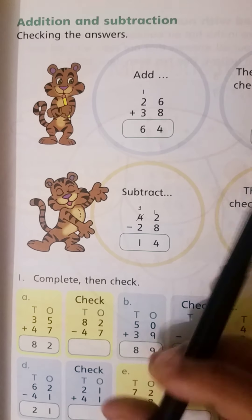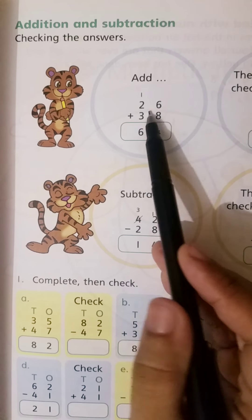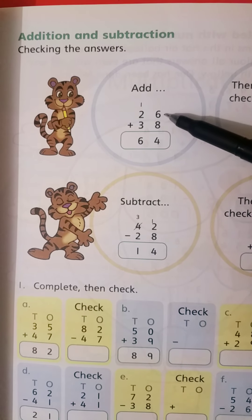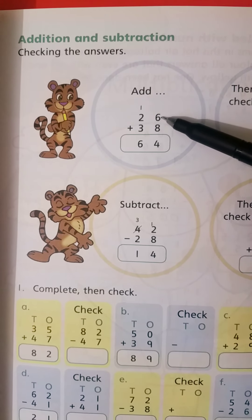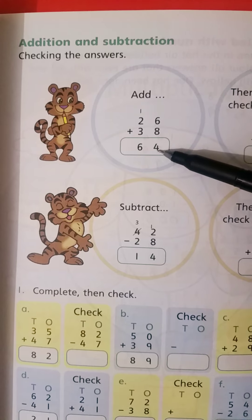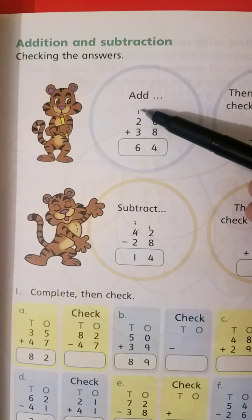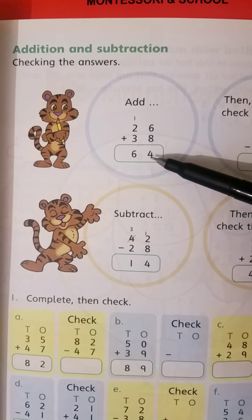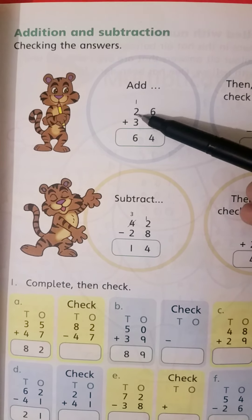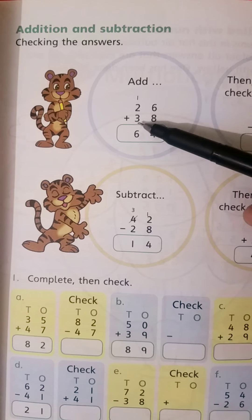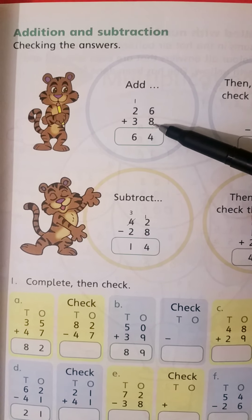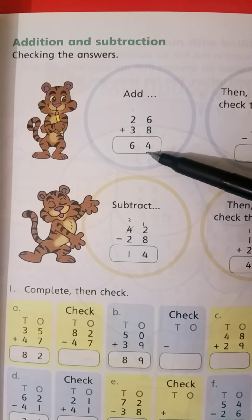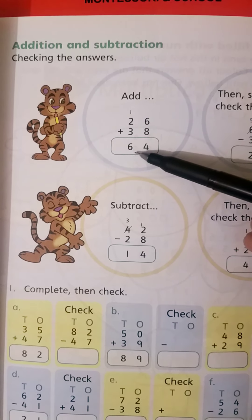For example, first here we have two numbers: 26 and 38. First add, start from 1's place. 6 plus 8 is 14. Put 4 here, 1 at 10's place. 1 plus 2 is 3, 3 plus 3 is 6. Answer is 64. This is the first number, 26, the second number is 38. First number and second number added, answer is 64. Now check the answer.